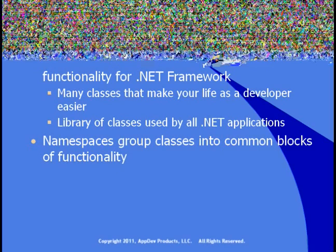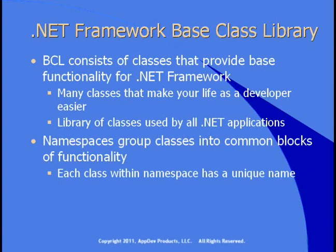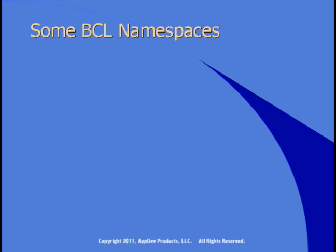The classes in the Framework are grouped into namespaces. The namespaces organize classes into common blocks of functionality, and within each namespace, each class has a unique name. Let's take a look at some of the namespaces in the BCL. There's System, which provides basic functionality. All of the structures and classes that comprise the data types are in here. String is in here, arrays are in System, math classes are in System — lots of things in there.